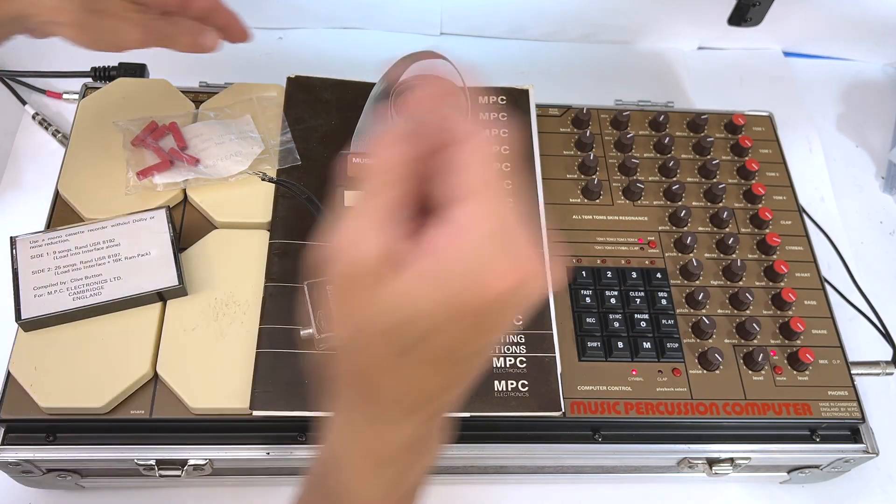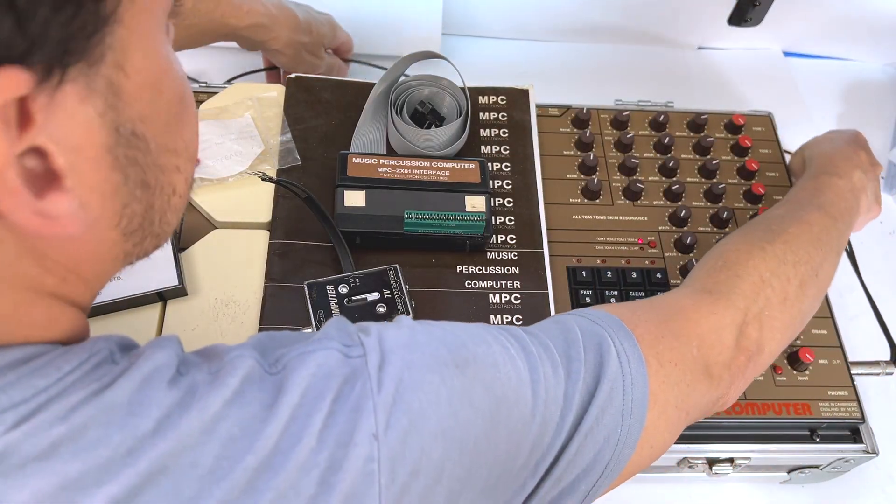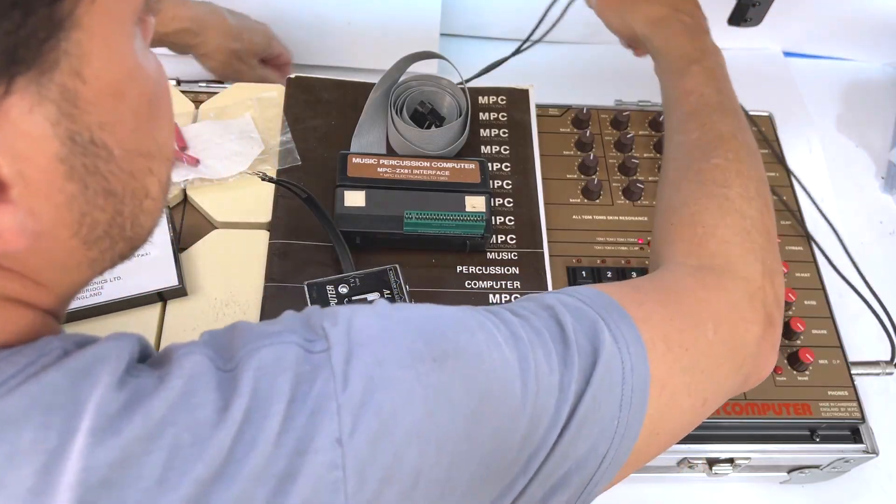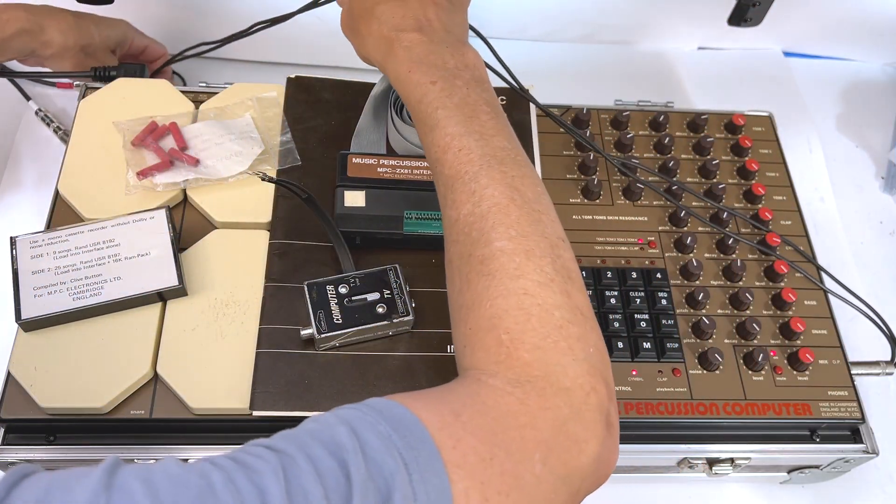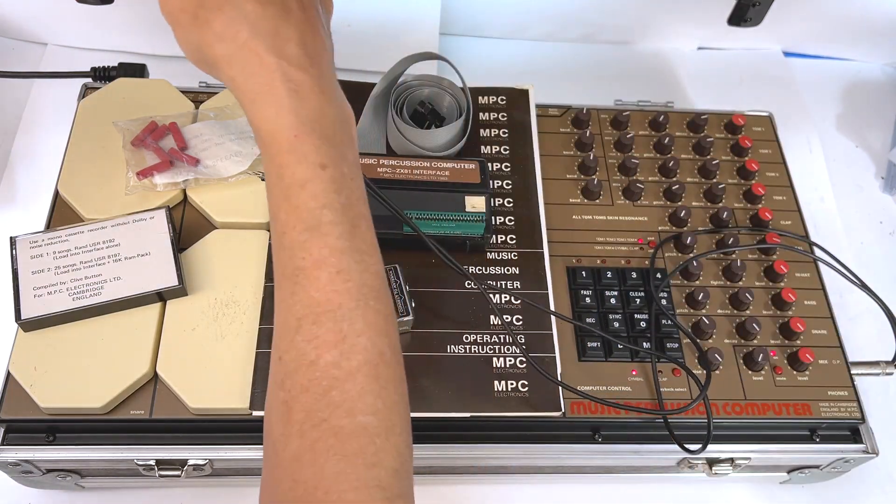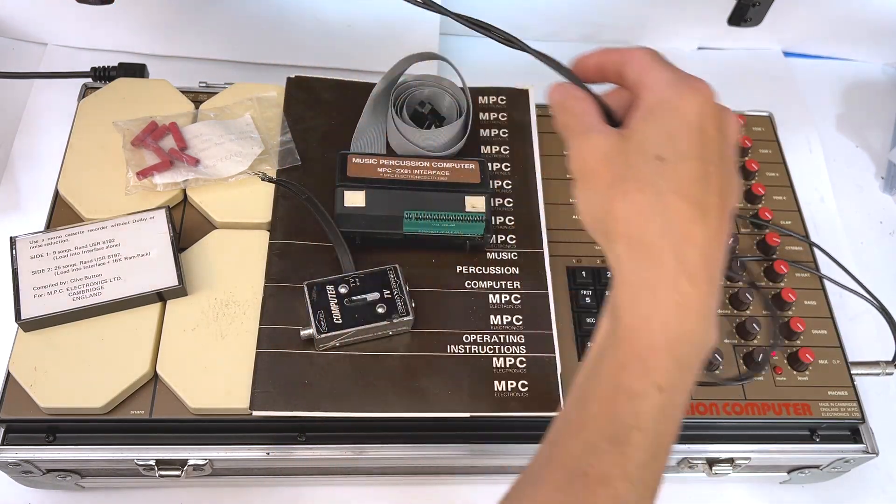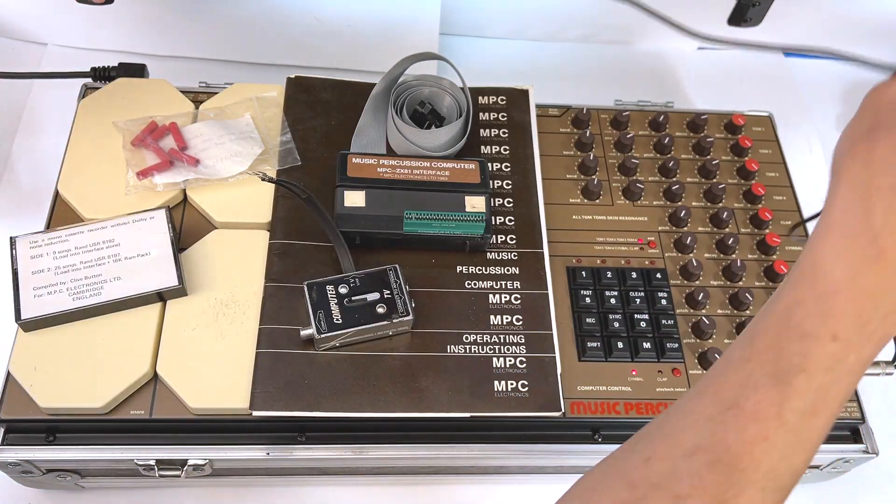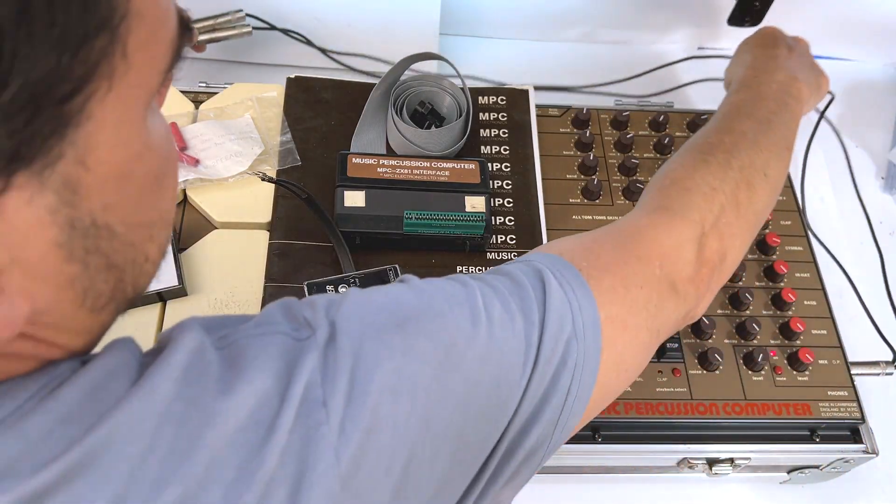And it came with this splitter, which I'm hiding back here—the Y-cable. The main output is a stereo jack. If you want to split it to two channels instead of just grounding one of the channels and going to one channel, you could use the splitter. That's it—came with that at the time.